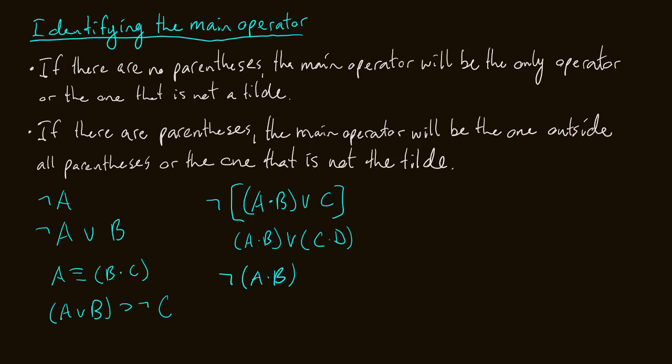First: ~A. We have no parentheses, so the main operator is the only operator or the one that is not a tilde. In this case there's only one operator — the negation. So negation is our main operator.